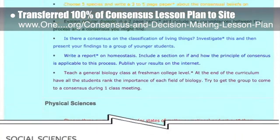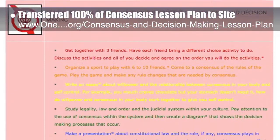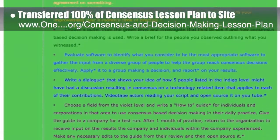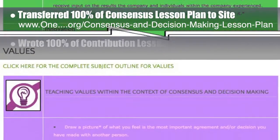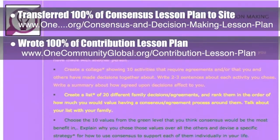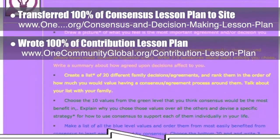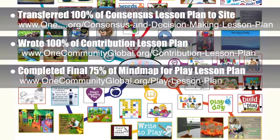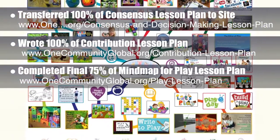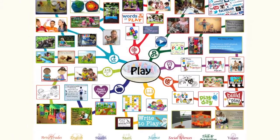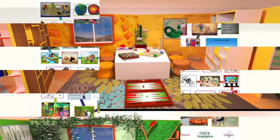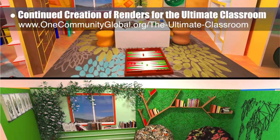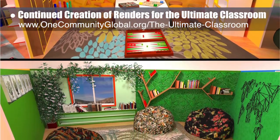This lesson plan is purposed to teach all subjects to all learning levels in any learning environment using the central theme of consensus. Behind the scenes, we completed 100% of the written part of the contribution lesson plan. We also completed the final 75% of the mind map for the play lesson plan, bringing it to 100% complete. In addition, the core team continued creation of renders for the ultimate classroom, adding items and updating textures for the yellow and green rooms, and adding updated windows as well.